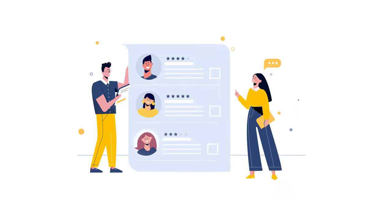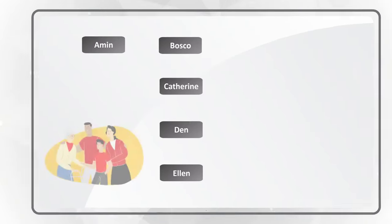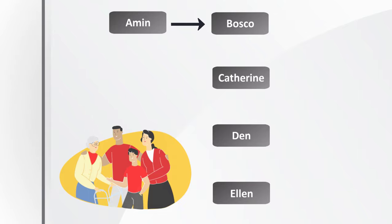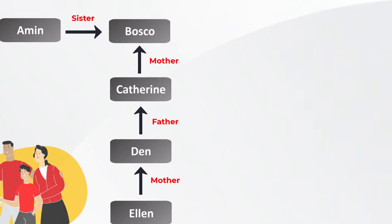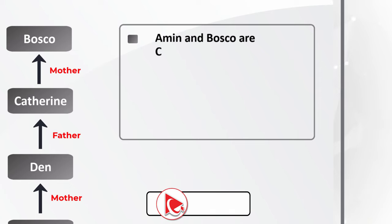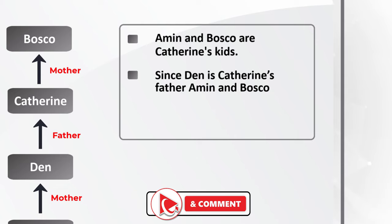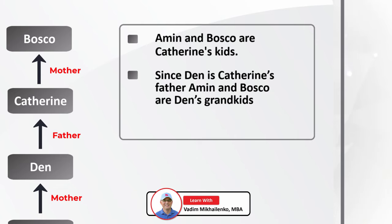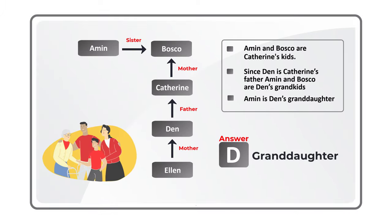The easiest way to determine this multigenerational relationship is to build a diagram. One step at a time: Amin is Baska's sister; Catherine is Baska's mother; Dan is Catherine's father; Alan is Dan's mother. From the diagram: Amin and Baska are Catherine's children. Since Dan is Catherine's father, Amin and Baska are Dan's grandkids. Which means Amin is Dan's granddaughter. So the correct choice is Choice D: granddaughter.